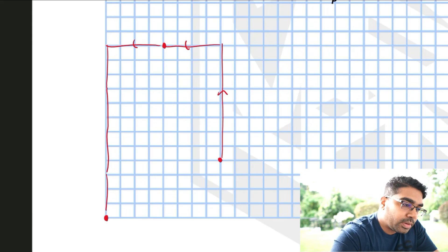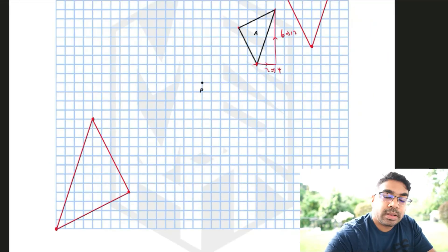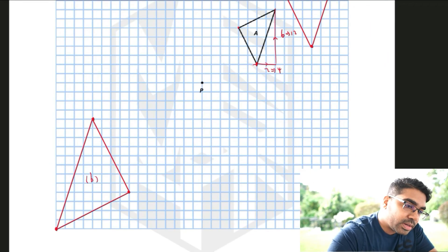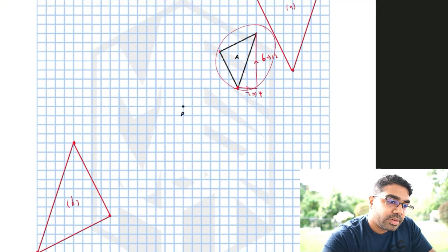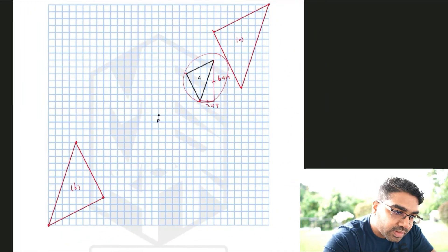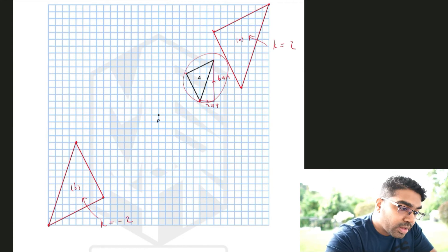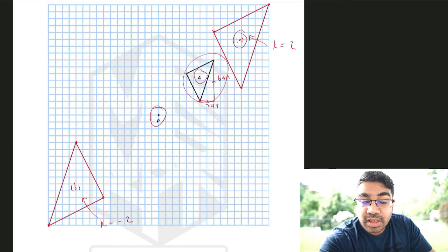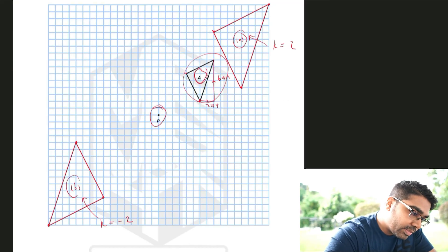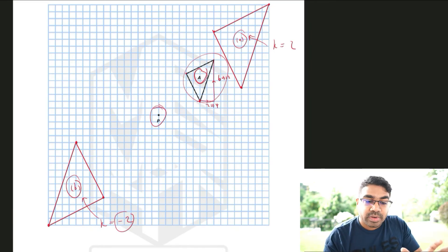This is the image of the object under enlargement with scale factor negative 2 at center P. You can see the size of the images are the same for scale factor 2 and negative 2 — however the position is different. Relative to the center of enlargement, the object and the positive-2 image are on the same side, but the object and the negative-2 image are on opposite sides.